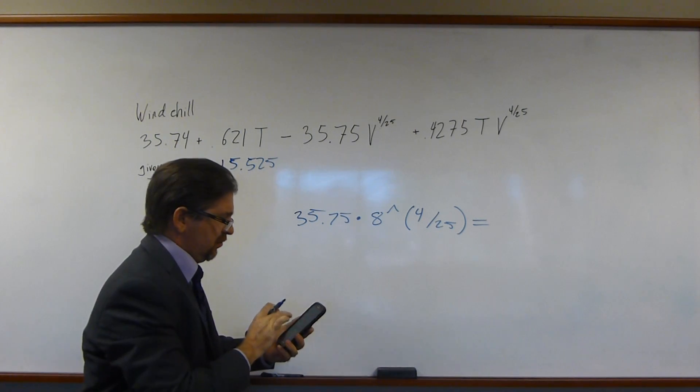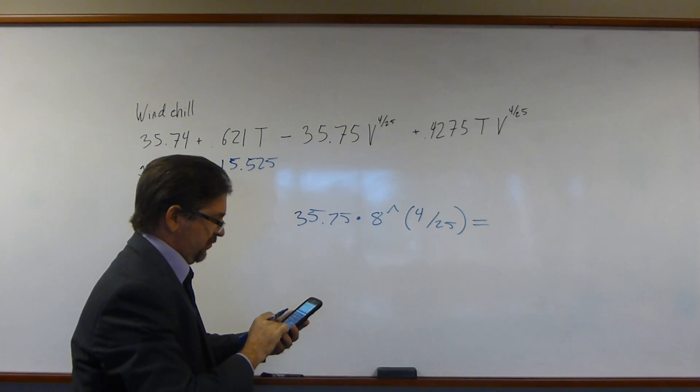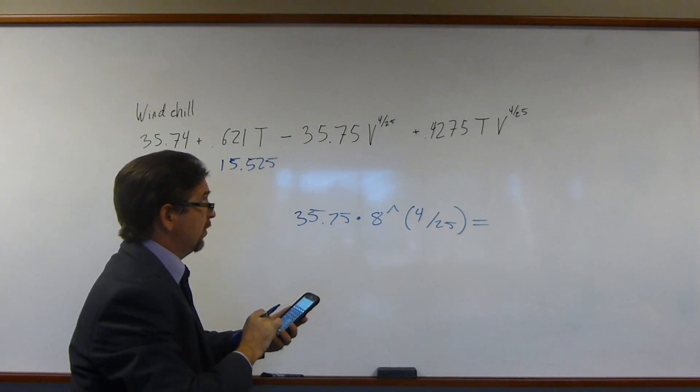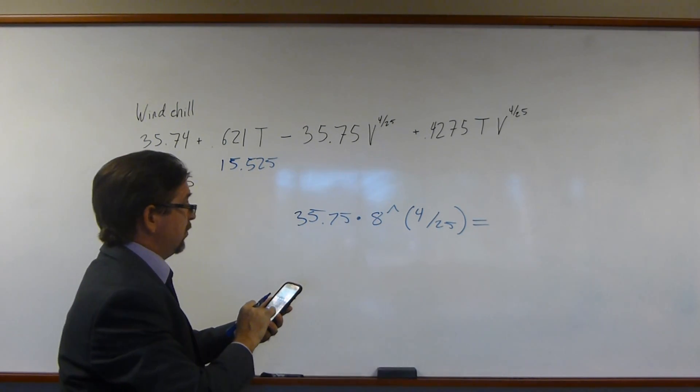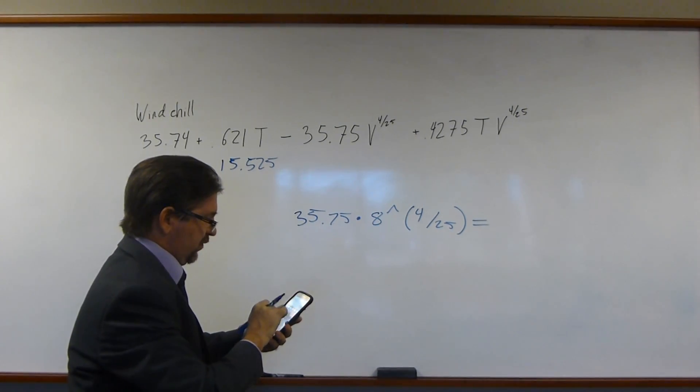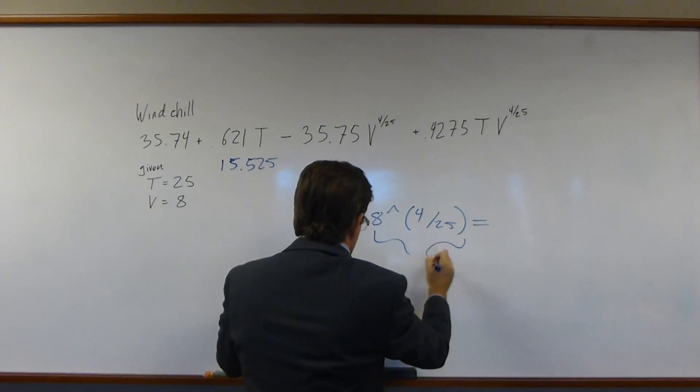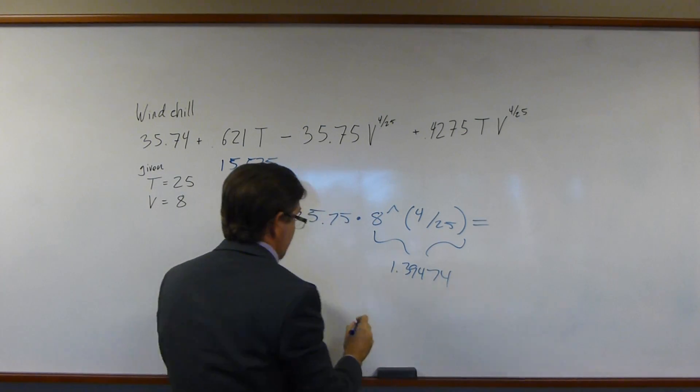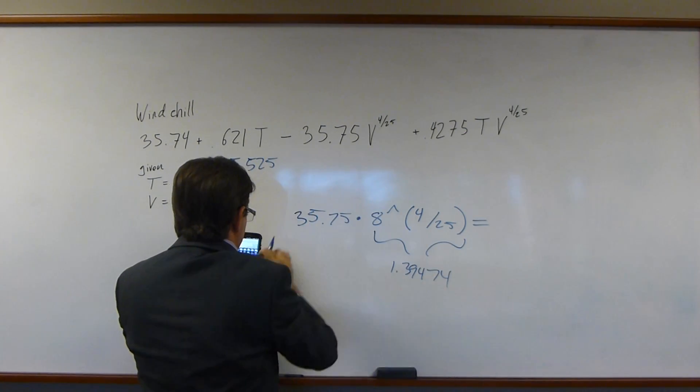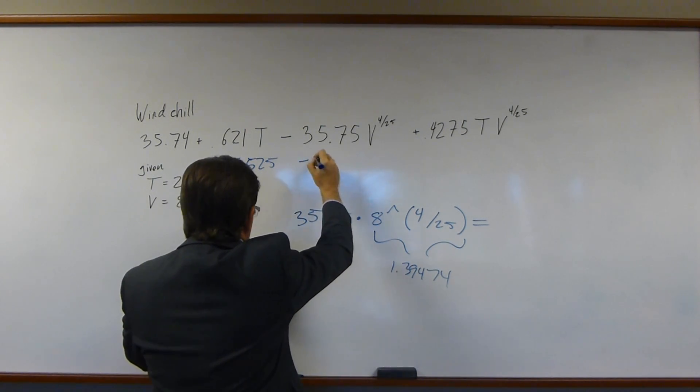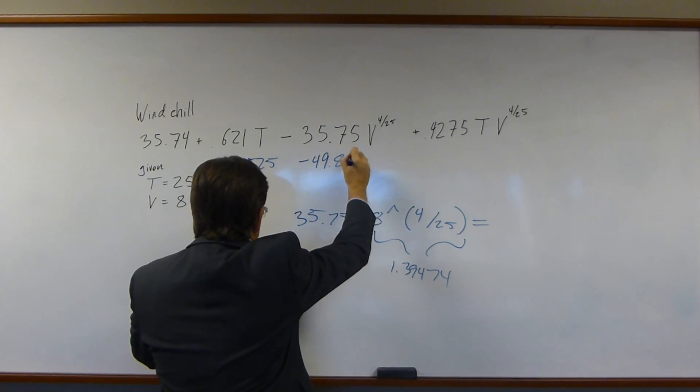Let me plug this into my calculator, which happens to be on my phone. 35.75 times 8 to the power of 4 over 25. So for this part, I get 1.39474. And for the total, I get negative 49.862.